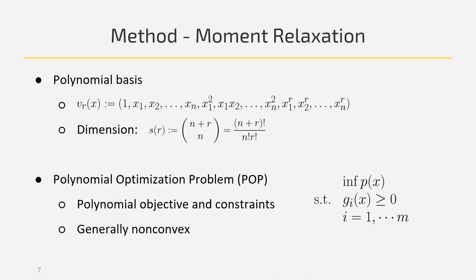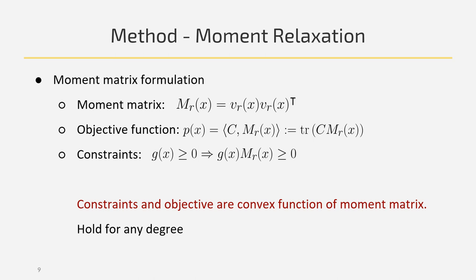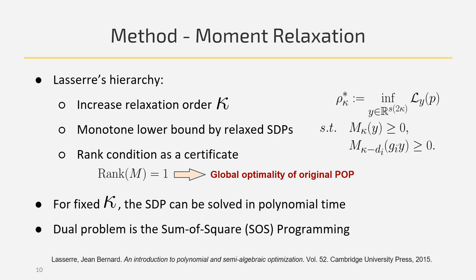A problem is a polynomial optimization if it has a polynomial objective function and polynomial constraints. Considering a polynomial basis and the moment matrix, we find that the constraints and objective functions are both convex functions of the moment matrix. The Lasserre hierarchy states that we can monotonically approximate the global optimal solutions via a sequence of SDPs with increasing size. Finally, if the rank condition of the SDP solution is satisfied, we can use it to certify global optimality.